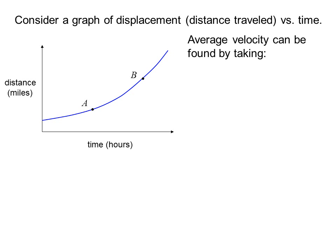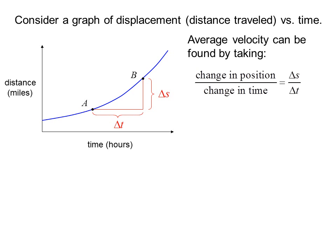Consider a graph of displacement, distance traveled versus time. Average velocity can be found by taking change in position over change in time, or delta S over delta T. We write V average equals delta S over delta T equals F of T plus delta T minus F of T over delta T.